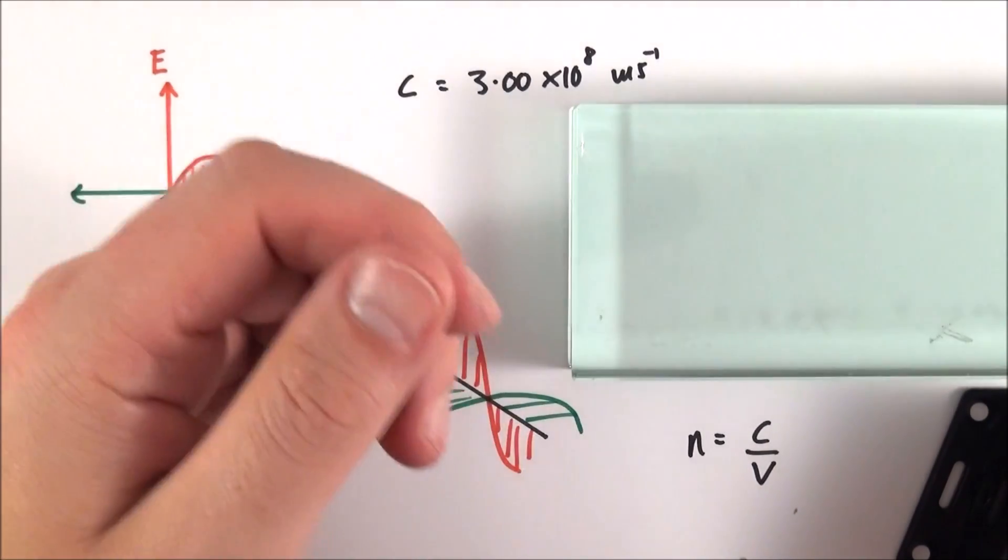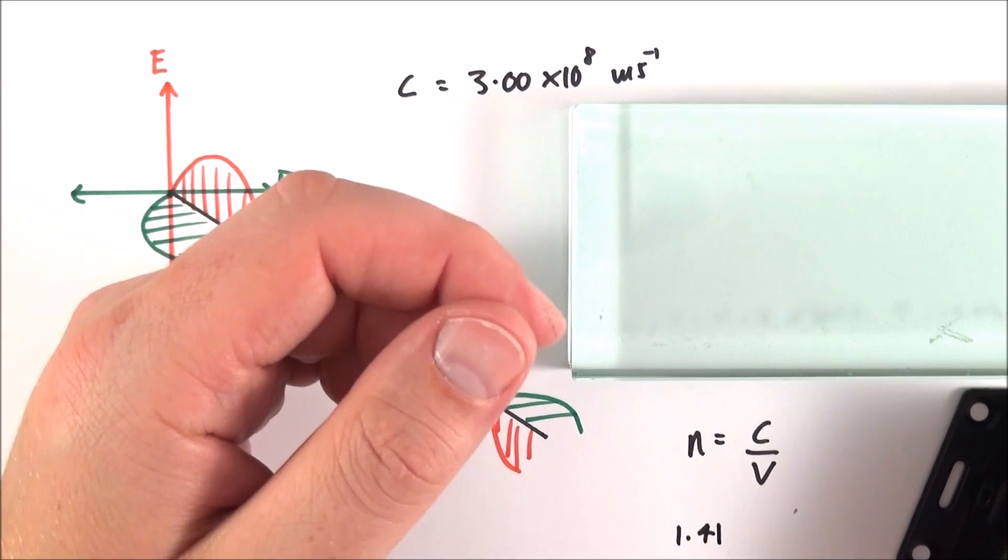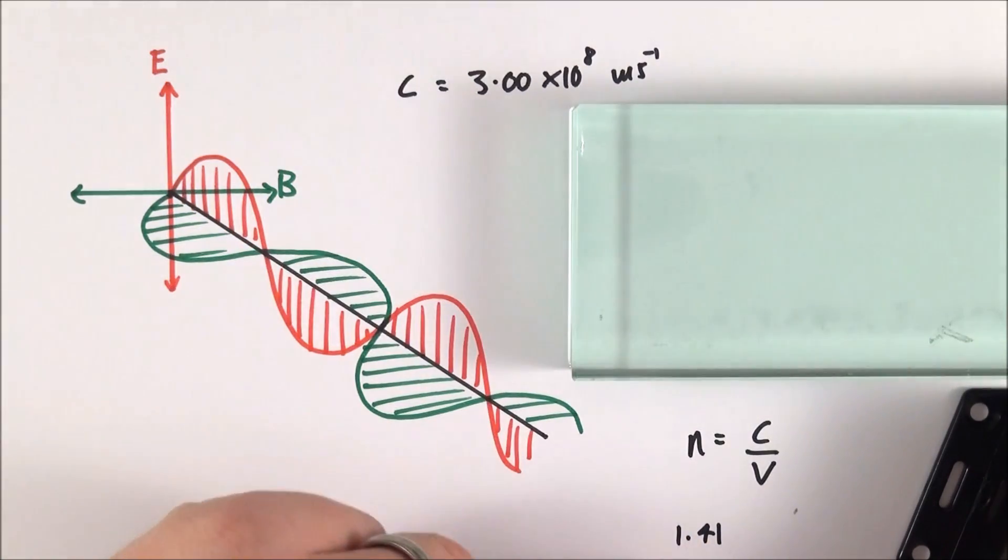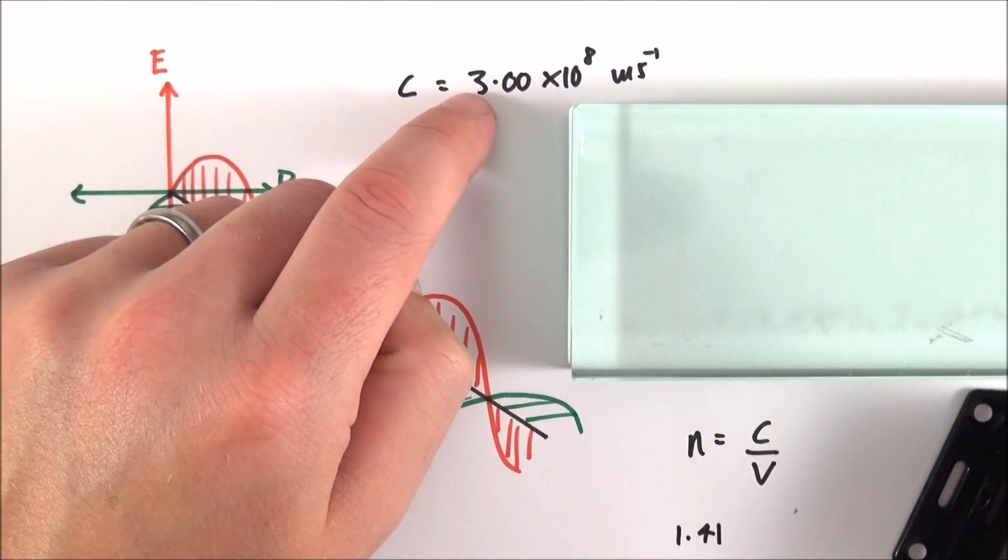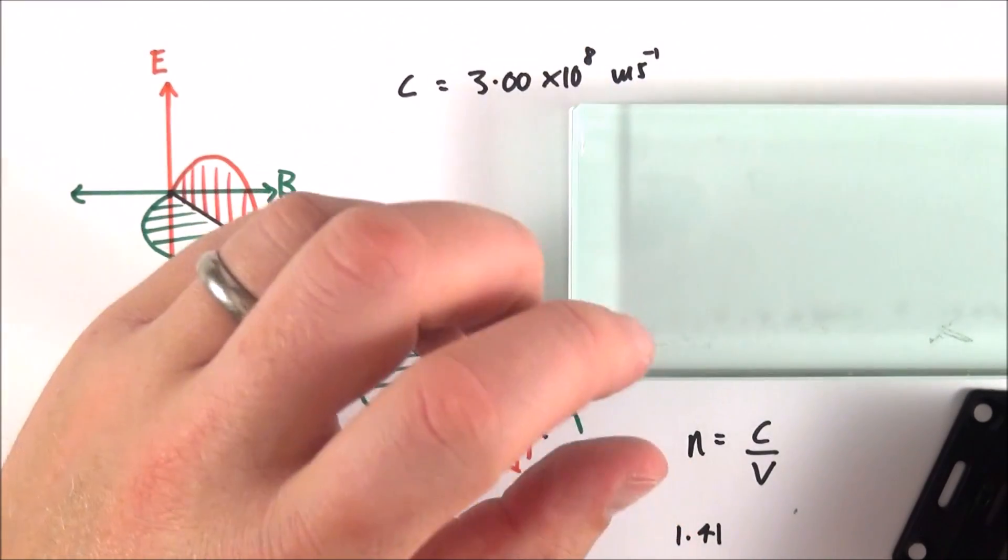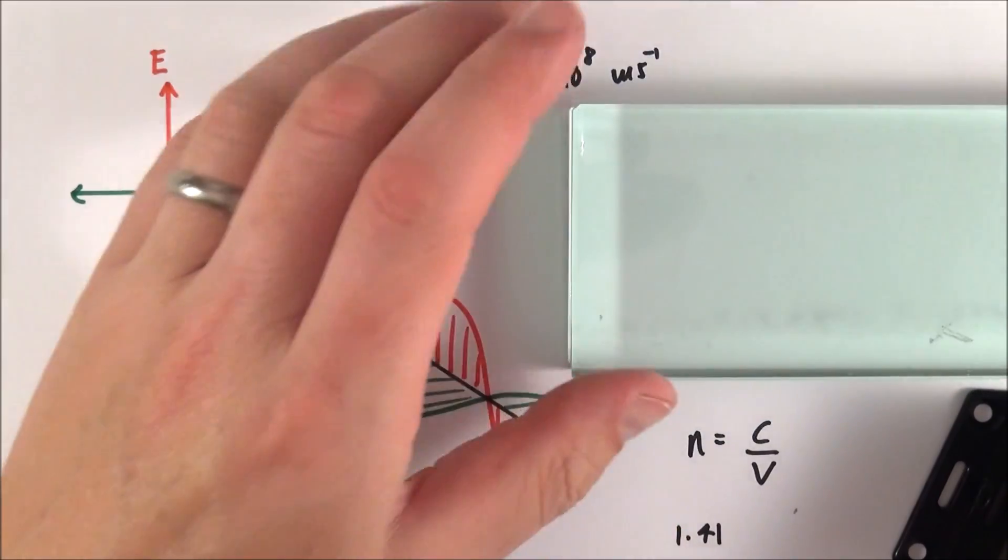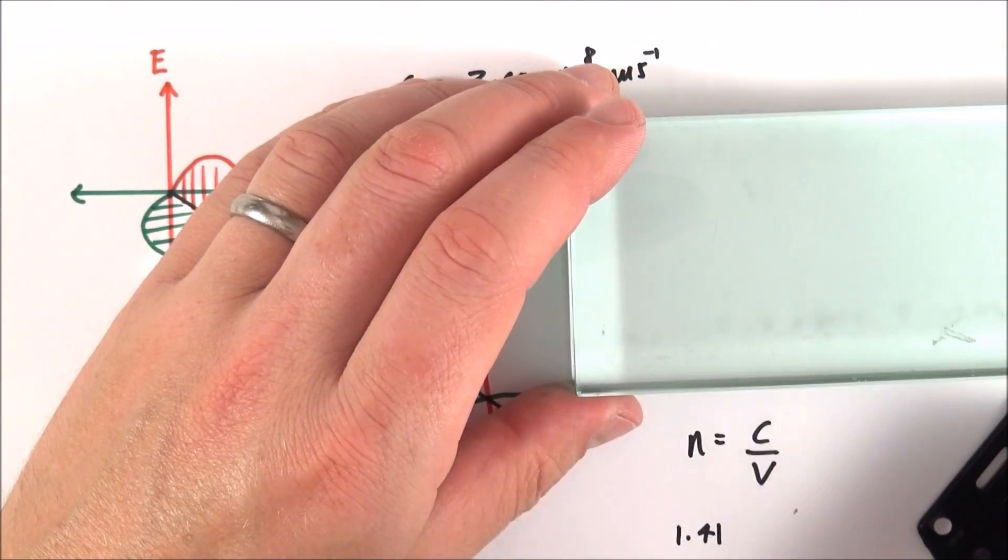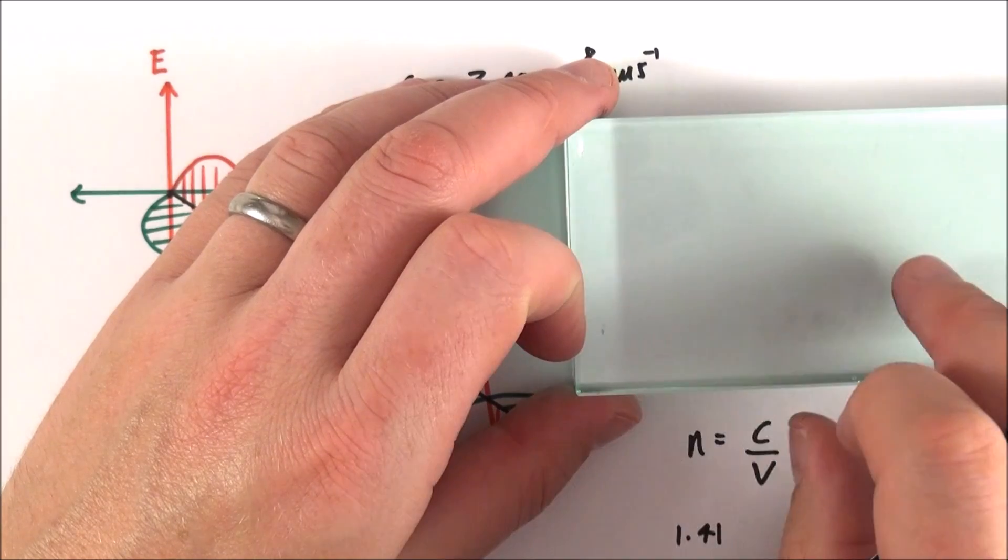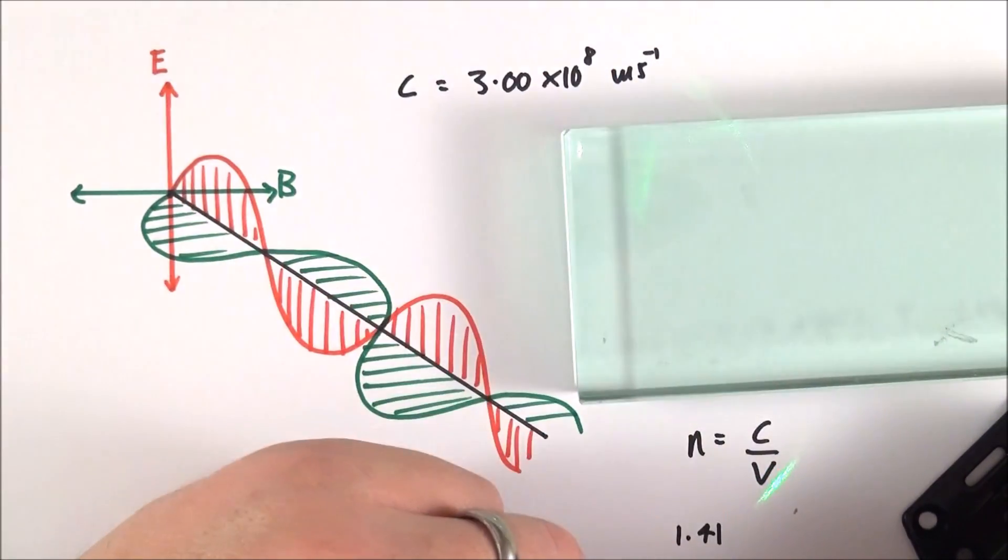Now if, for example, something has a value of 1.41, this means that the light will slow down by 1.41 times. So basically, 3 times 10 to the 8 divided by 1.41 would then give you the speed of light in that material. So if you have things with a high refractive index, they slow the light down more, and if you have refraction, that means the light is bent more in those cases.